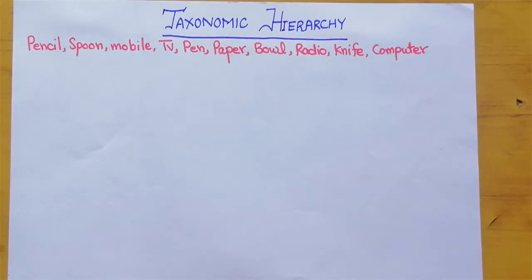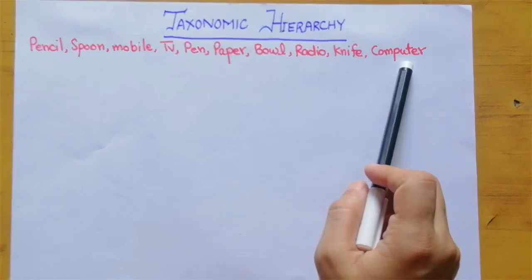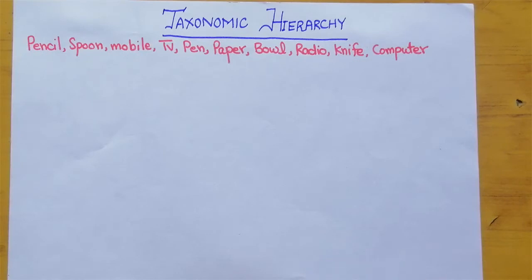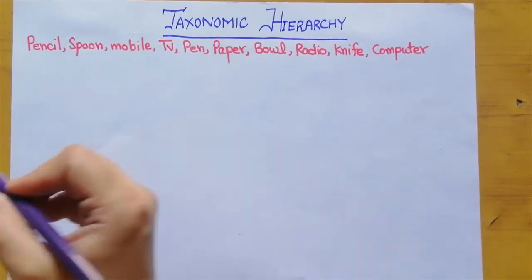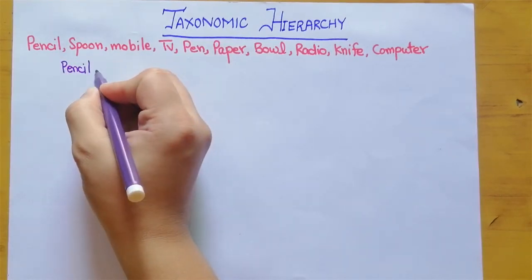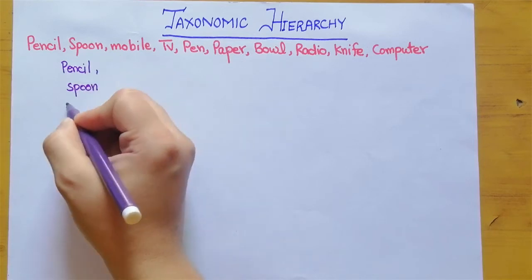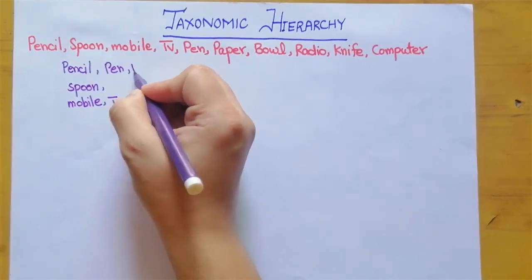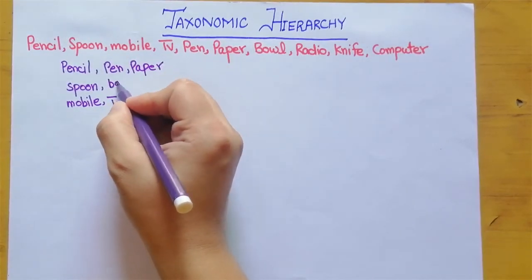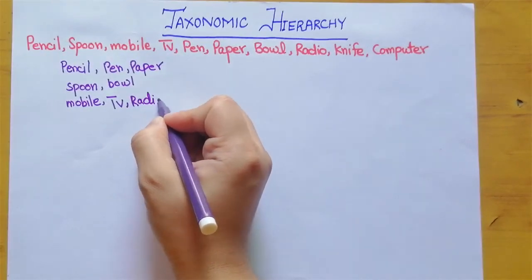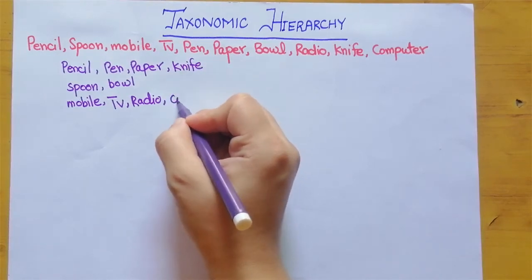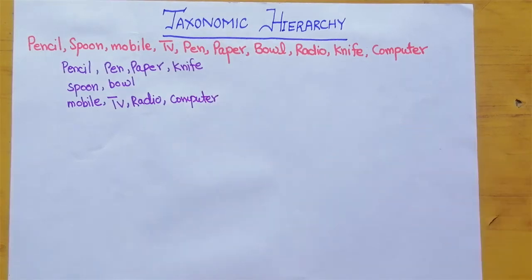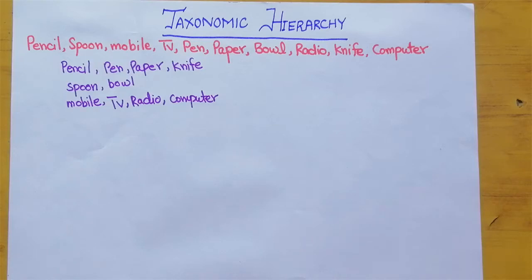Hello, welcome to Ahmed Coaching. Today we are going to talk about taxonomic hierarchy. Here I have a list of some items — just by looking at these items, can you guess which category they can belong to? It's difficult, right? But if I arrange these items — pencil, spoon, mobile, TV, pen, paper, bowl, radio, knife, computer — now you can easily identify which category these items belong to.